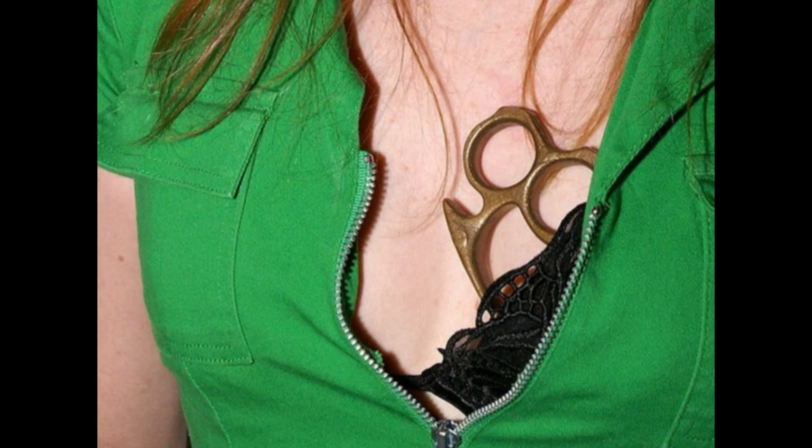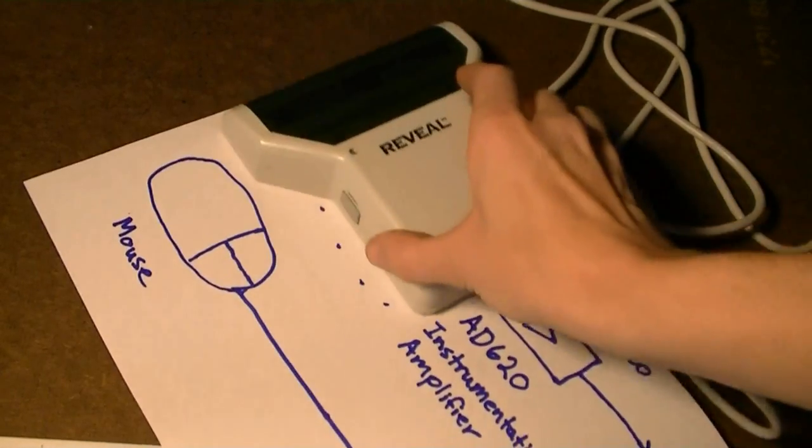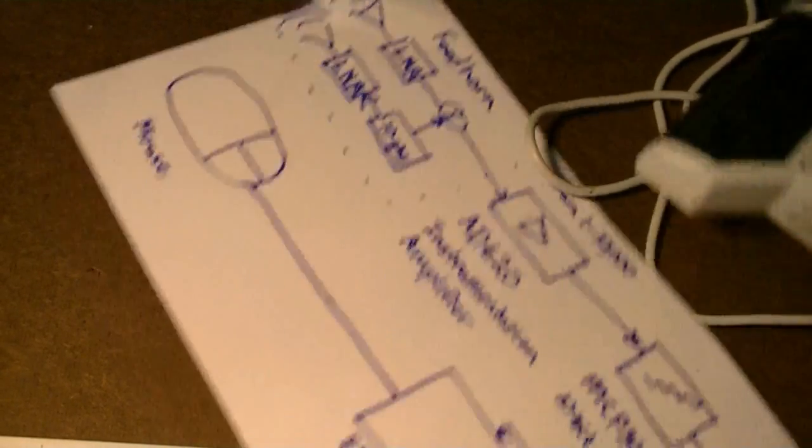So I set out to find a way to use microwaves to peer through clothing. I haven't found a way to do it at a distance, but I have found a way that I can do it like the old optical hand scanners from back in the 90s.